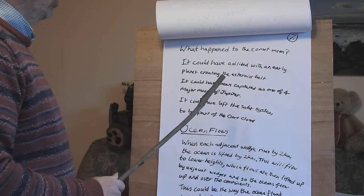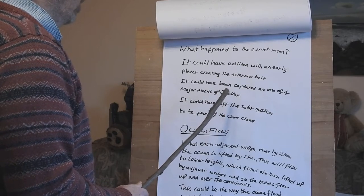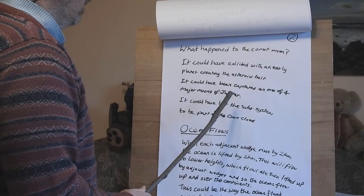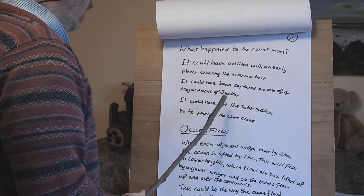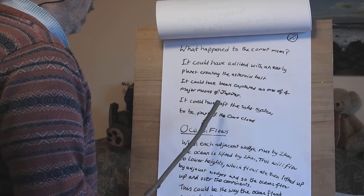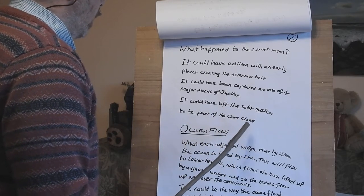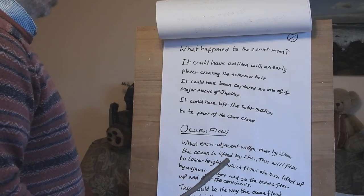What happened to the comet moon? It could have collided with an early planet, creating the asteroid belt between Mars and Earth. It could have been captured as one of the four major moons of Jupiter. It could have left the solar system to be part of the Oort cloud. So there's options there.